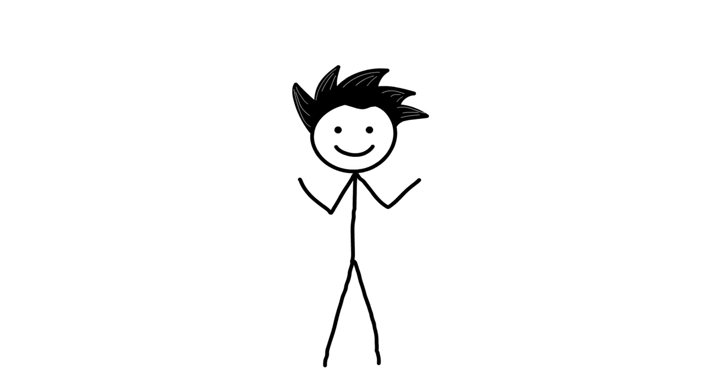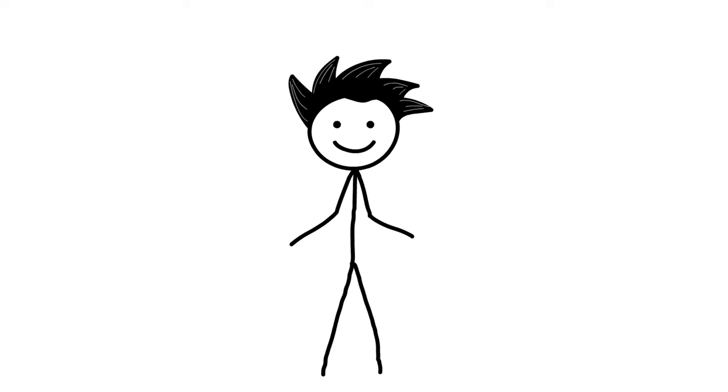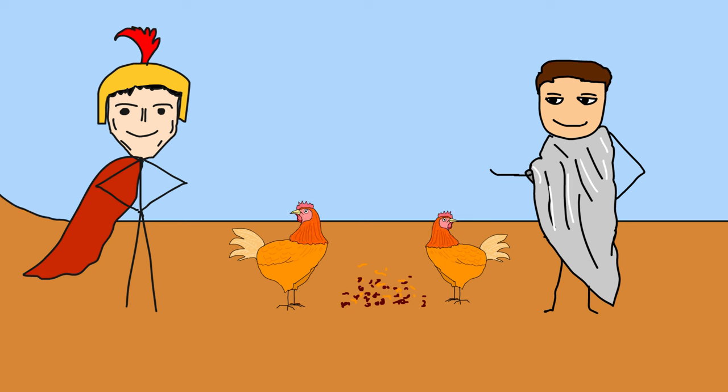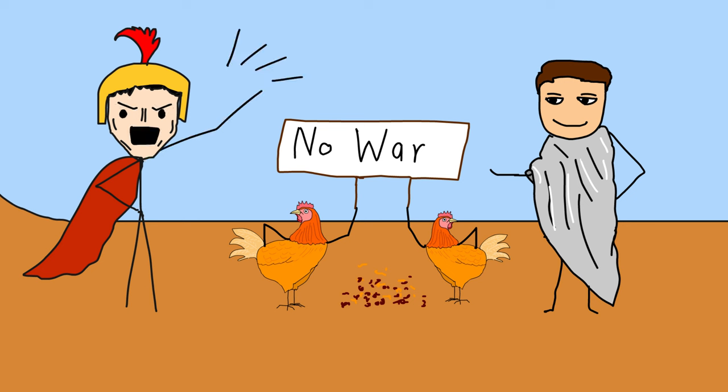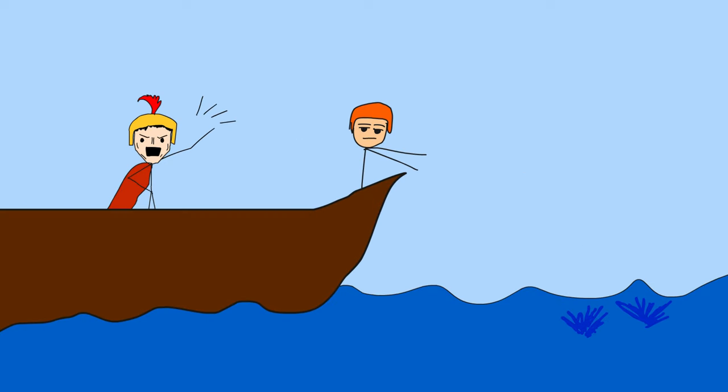So before engaging in battle, he consulted the sacred chickens to know what would be the outcome. During the ritual, chickens refused to eat anything. The outcome was decided by the sacred chickens. However, Pulcher said, if they will not eat, they will drink, and threw those chickens overboard into the sea.